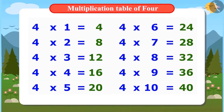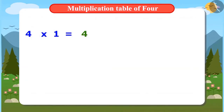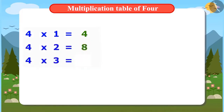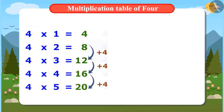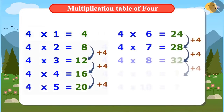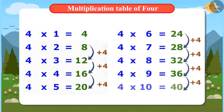This is fun. To find the multiplication table of 4, write 4 first and add 4 to it. Add 4 again to the result. Keep doing this till you get the whole multiplication table.